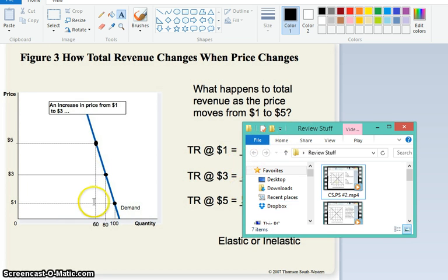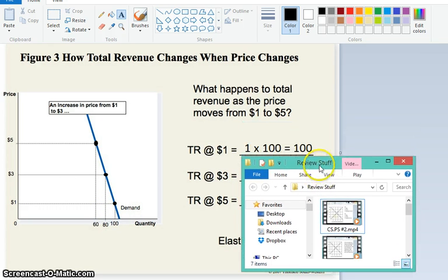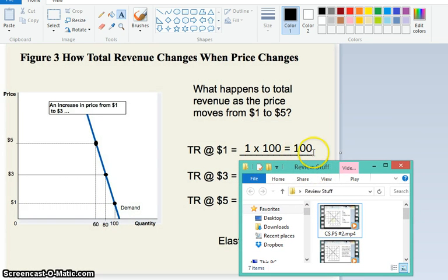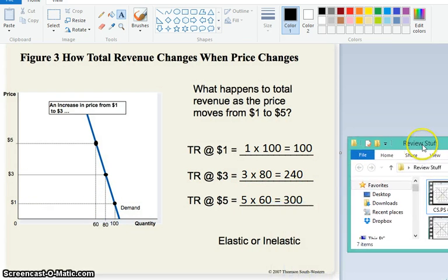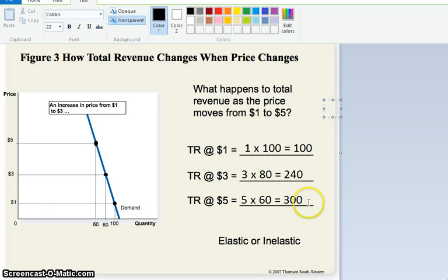So at $1, I've got a quantity of 100, so total revenue is $100. At $3, quantity is 80, so 3 times 80 is $240. And then at $5, quantity is 60, so that's $300.